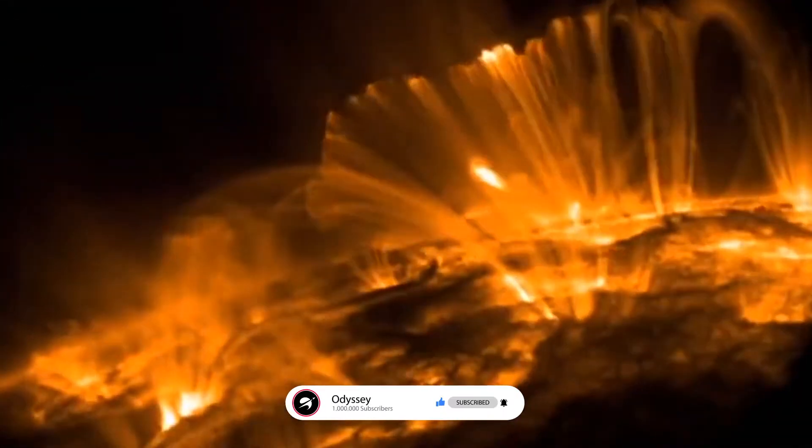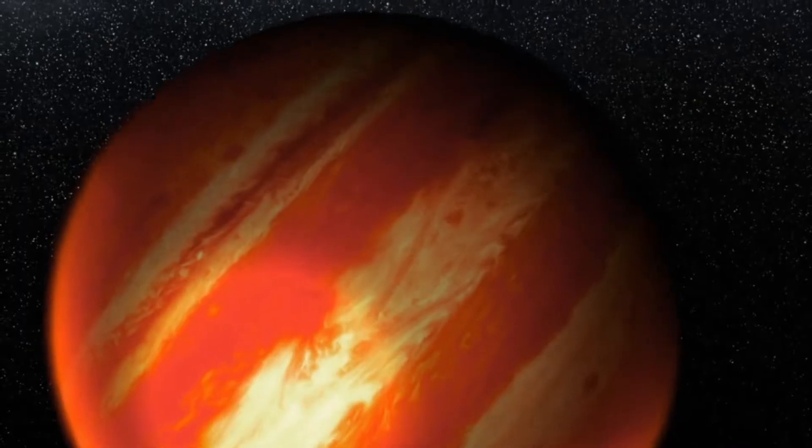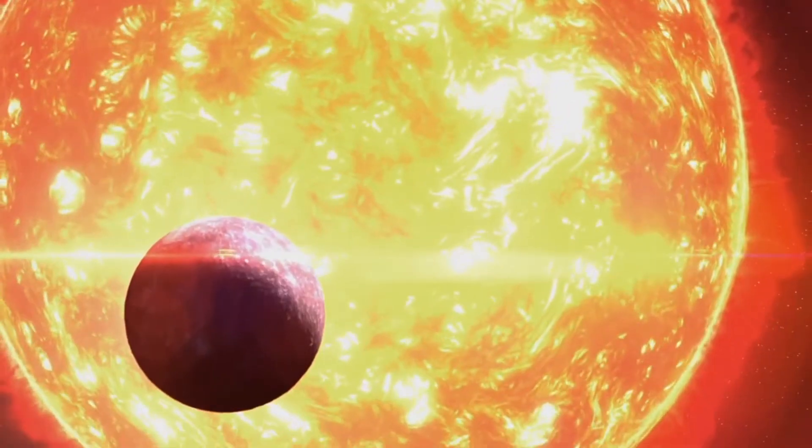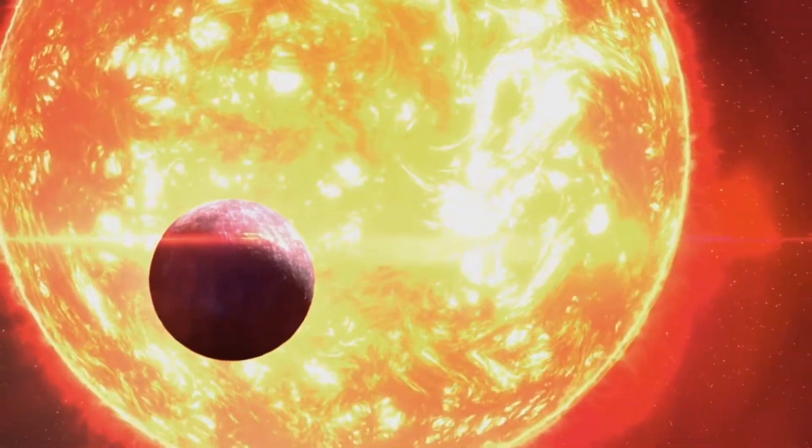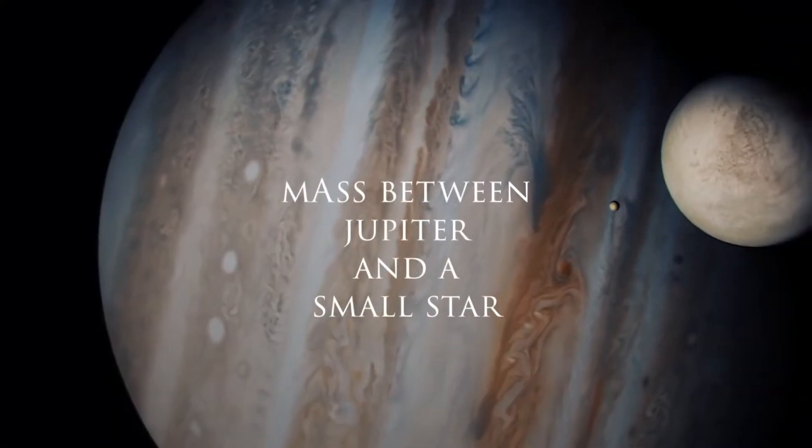In other words, brown dwarfs begin to fuse hydrogen at first, but then they stabilize and the fusion stops. When it comes to sizes and masses, these failed stars are objects which have a size between a giant planet like Jupiter and that of a small star.